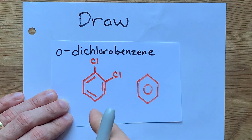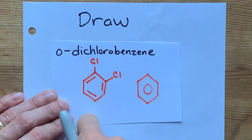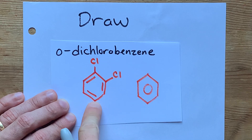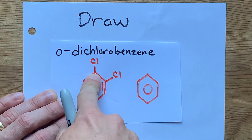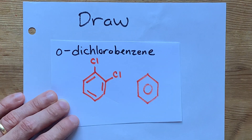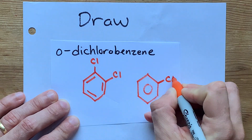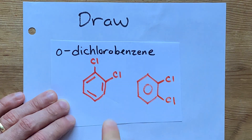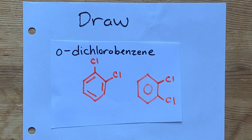It doesn't actually matter where you draw these CLs along the benzene molecule. You could have picked this one and that one, or this one and that one. As long as they are right beside each other, that's what ortho means. So just to emphasize that, I'll do one here and one here — this is also ortho-dichlorobenzene. Thanks for being with me and best of luck.